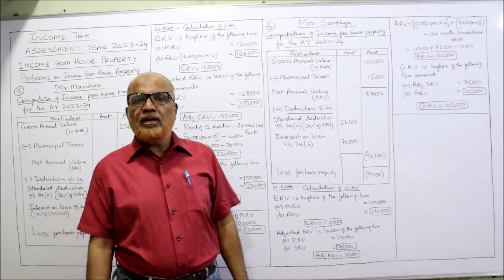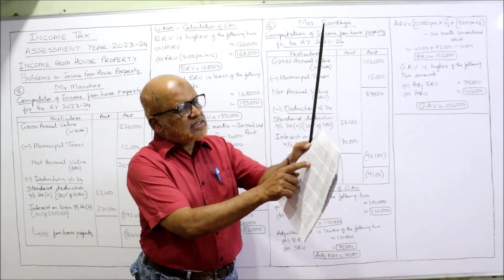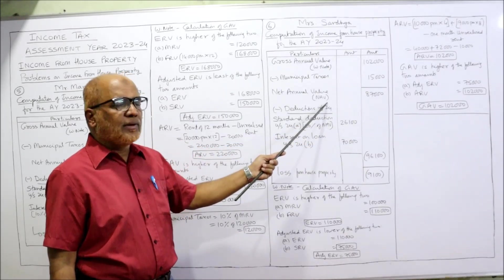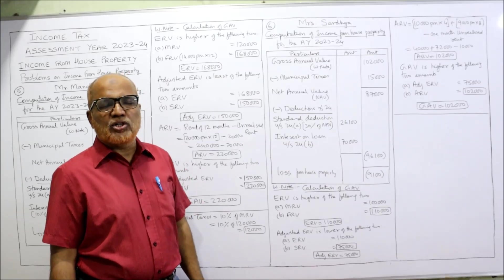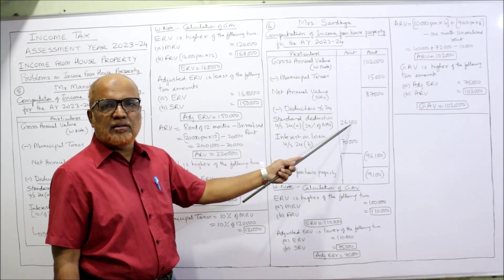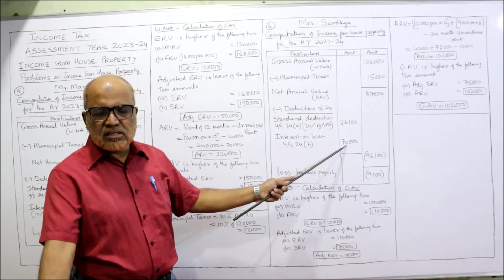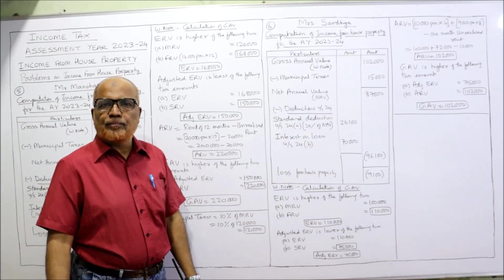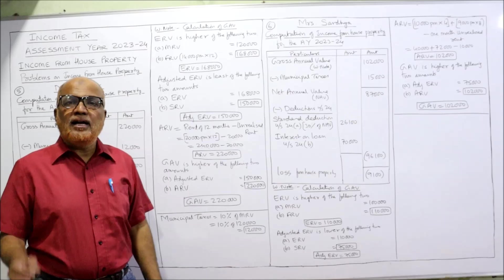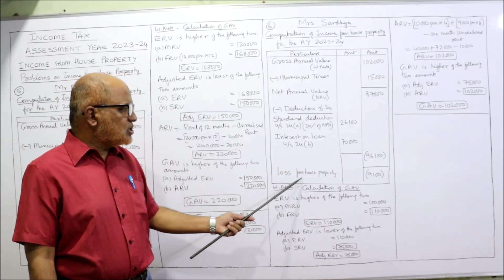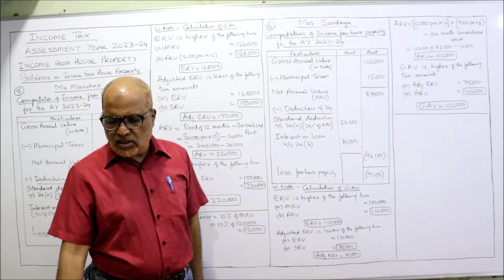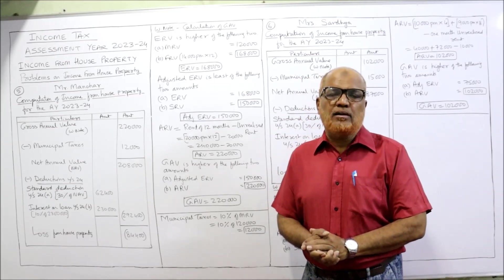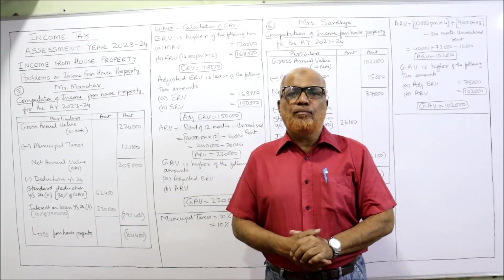From GAV, deduct municipal taxes to get NAV. Under Section 24A, standard deduction is 30% of NAV, which equals 26,100, and interest on loan is 70,000. Total deductions are 96,100. Subtracting from NAV gives a negative figure of 9,100 — again a loss from house property of 9,100. This is the end of problem six. In total, six problems have been explained. We will continue with the next problem in the next video.